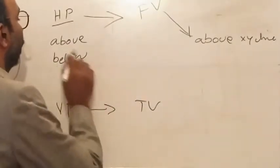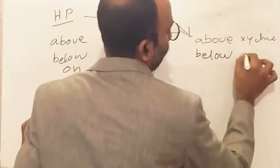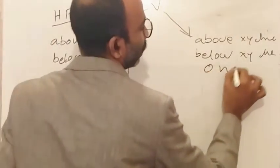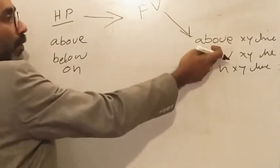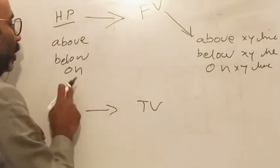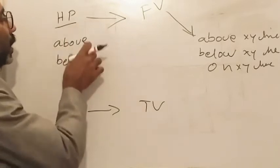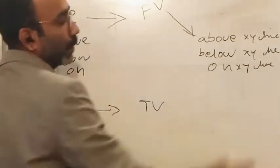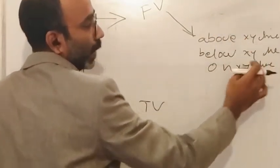If it is above HP, the front view is above XY line. If it is below, then it is below XY line. If it is on, it is also on XY line. Very simple — if it is above, the front view is above; if it is below, the front view is below; if it is on, the front view is on. This is the relation with HP, and it determines position relative to the XY line.